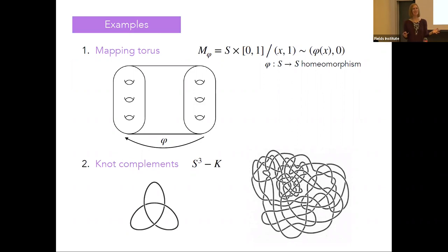What's the definition of a three-manifold? A three-manifold is just a topological space that locally looks like ℝ³.